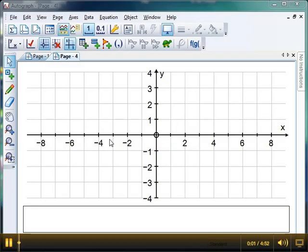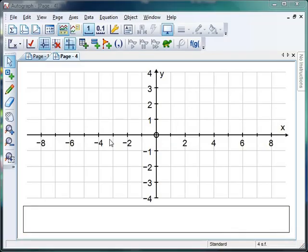Welcome to Mr. Barton's Autograph video number 29. Last week we looked at how we might use Autograph to introduce students to scatter diagrams and the concepts of the line of best fit. This week I thought we'd take that one stage further and use Autograph to show exactly where this line of best fit comes from.